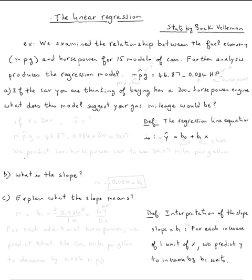We examine the relationship between the fuel economy, miles per gallon, and horsepower for 15 models of cars. Further analysis produces the regression model, miles per gallon, expected.